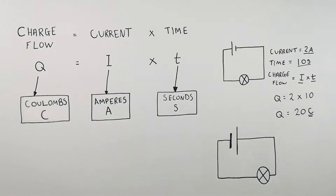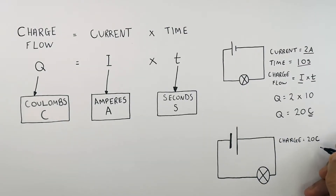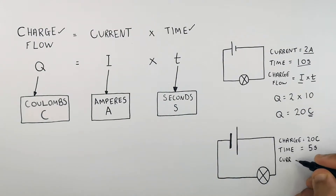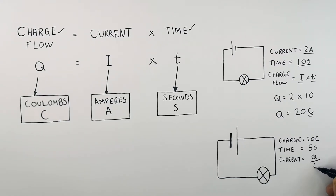In this next example, we have the charge which is 20 coulombs, and we have the time the circuit was switched on for. That means we can use this information to calculate the current, which is the rate of charge flow through the circuit. So the current equals Q divided by T — we rearrange for I, so I equals Q over T.